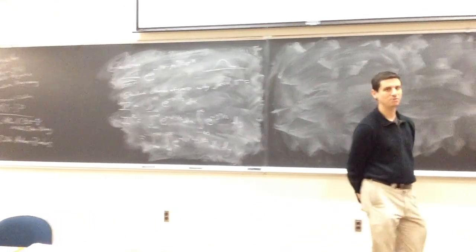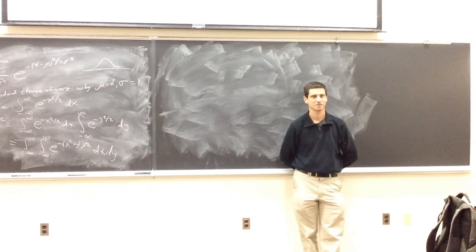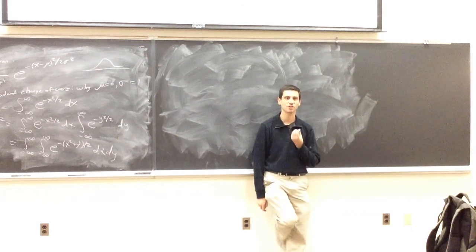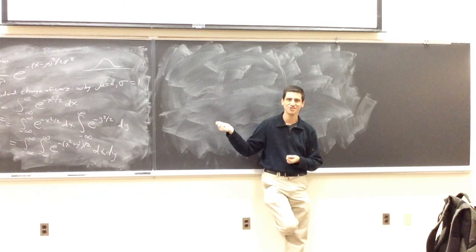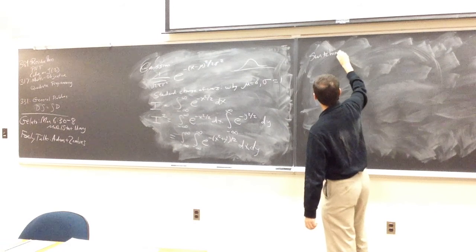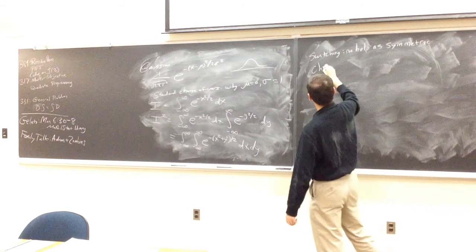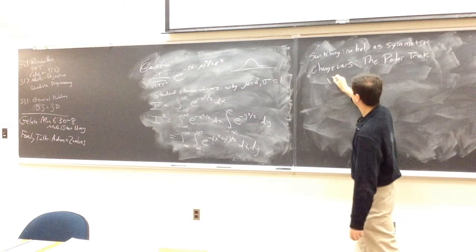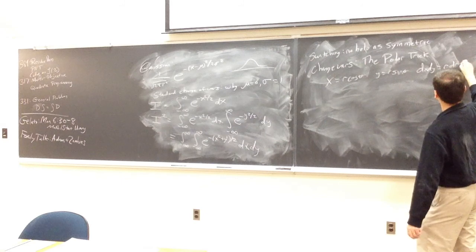Any thoughts on what we should do next? Replace x² + y² with r². Excellent. There are two things you can do in Calc 3: switch the order of integration and change variables. This function is symmetric in x and y, so switching the order won't gain us anything. So we change variables — and this is called the polar trick. We let x = r cos θ, y = r sin θ, and dx dy becomes r dr dθ.